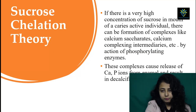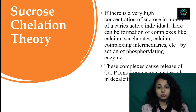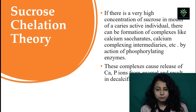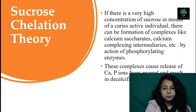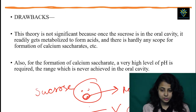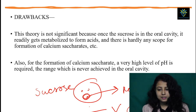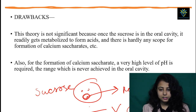Then comes the sucrose chelation theory. If there is a very high concentration of sucrose in the mouth of a caries-active individual, there can be formation of complexes like calcium saccharides and calcium complex intermediates by the action of phosphorylating enzymes. These complexes cause release of calcium and phosphorus ions from the enamel, resulting in decalcification. However, this theory was not accepted because sucrose in the oral cavity readily gets metabolized to form acid, so there is no chance of formation of calcium saccharides.